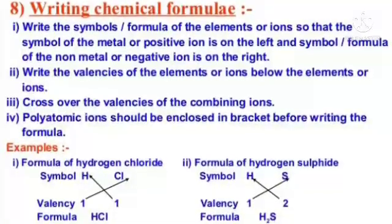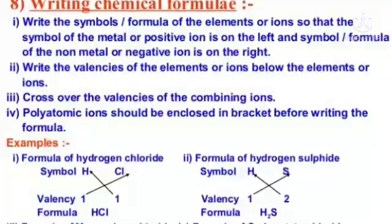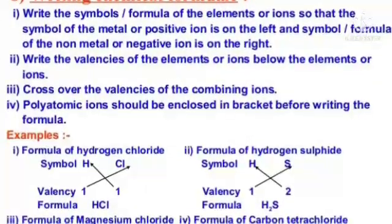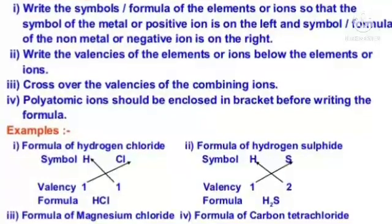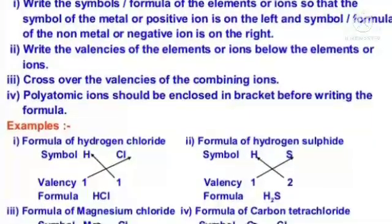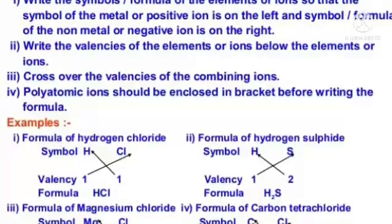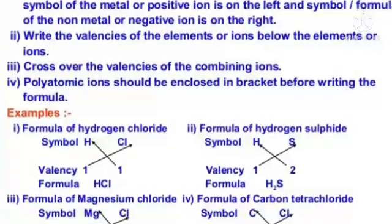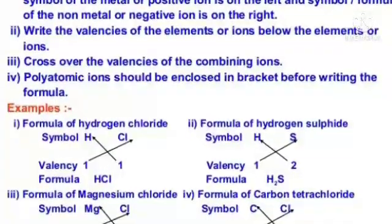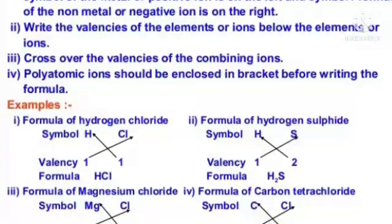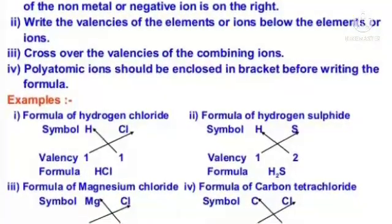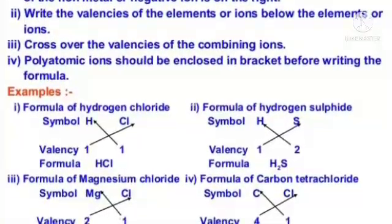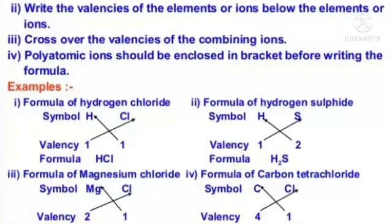Writing chemical formulae: Step one — write the symbols or formula of the elements or ions so that the symbol of the metal or positive ion is on the left and the symbol or formula of the non-metal or negative ion is on the right. Step two — write the valences of the elements or ions below them and cross over the valences of the combining ions. Polyatomic ions should be enclosed in brackets before writing the formula. Look at the examples given below.